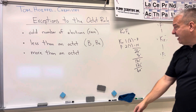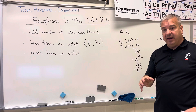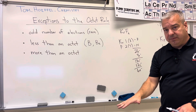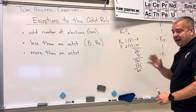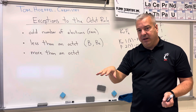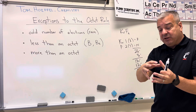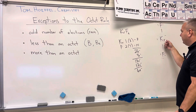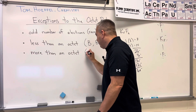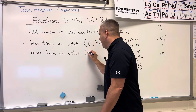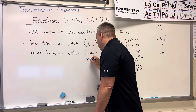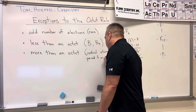This is allowed under one condition: the central atom must be in period three or below. Remember, that means going across the periods — period three or lower. You cannot expand the octet on really small central atoms; you can't do it in period one or period two. But by the time you get to period three, the central atom is large enough to handle expanded octets — that is, when the central atom has more than eight valence electrons. When can you have more than an octet? When the central atom is in period three or below.